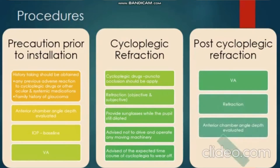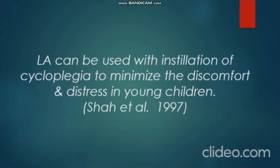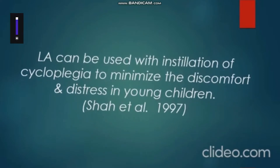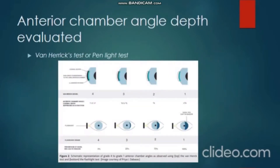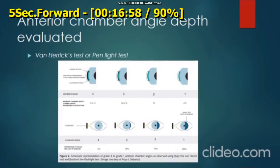Post-cycloplegic refraction precautions: take visual acuity again, do the refraction again, and measure the anterior chamber angle. Local anesthesia can be used with installation of cycloplegia to minimize discomfort and distress in young children. The anterior chamber angle depth evaluation using the Von Herrick test or the pallette test will not be discussed in detail right now.